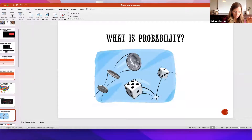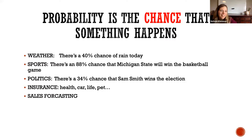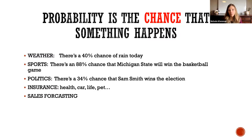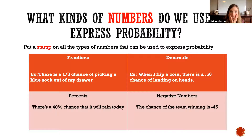Probability is just the chance that something happens. Like if I say there's a 40% chance of rain today, or an 88% chance Michigan State will win the basketball game, or a 34% chance that Sam Smith wins the election. They don't always have to be percentages — we'll talk about other numbers we can use to express probability. Insurance is another example: a car insurance company has to figure out the chance you'll get into an accident so they can figure out how much money to charge you.